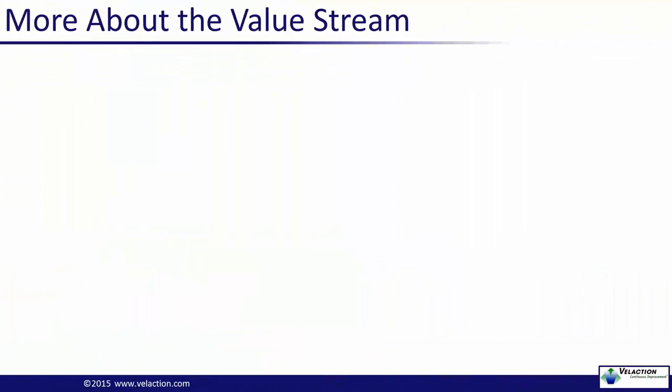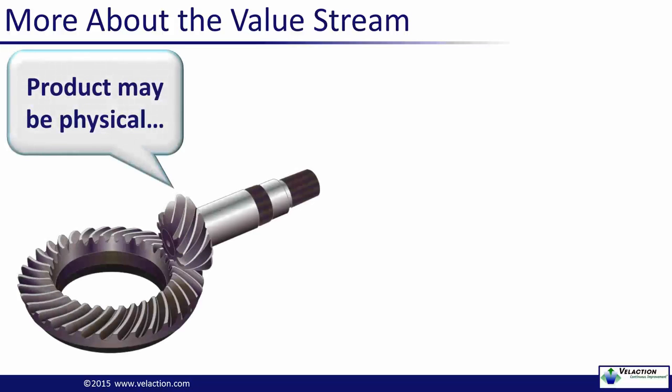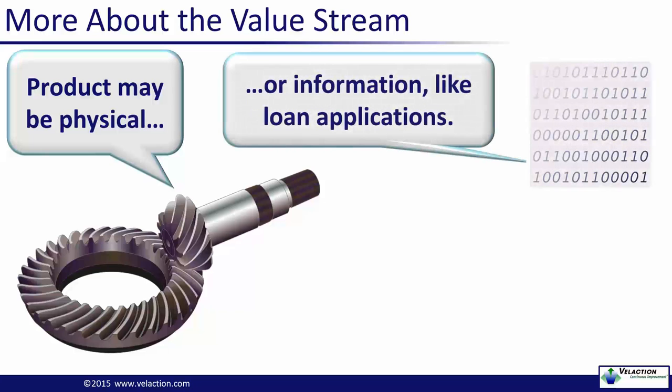As most people with a cursory understanding of VSMs know, they are very useful for tracking the Value Stream of a physical product. But they are also great when the product is information. Think of a loan process or an ordering process. There are a series of linked activities that move the information through time and space to satisfy a customer. Be careful about whether or not the activities are truly providing value, though, or if they are just a supporting process.